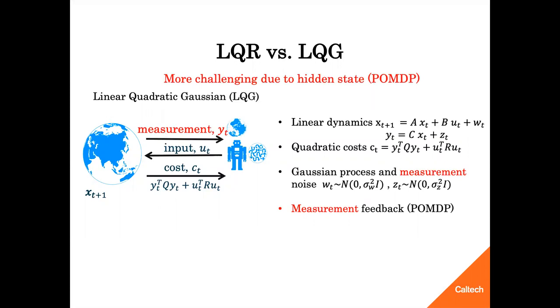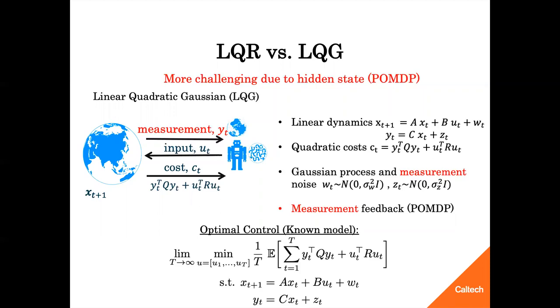Linear quadratic Gaussian, or LQG, which is the topic of study of this paper, is the more challenging setting than LQR, and it also subsumes LQR. Instead of the state, a noisy measurement of linear function of the state is observed, which is denoted as Y. Therefore, this setting is an example of partially observable Markov decision processes. The cost in the setting depends quadratically on the measurement and the input. The noise in the system is due to process noise in dynamics evolution, denoted as WT, and the measurement noise in the output, which is denoted as ZT. The optimal control problem for a known model is given as follows, similar to LQR.